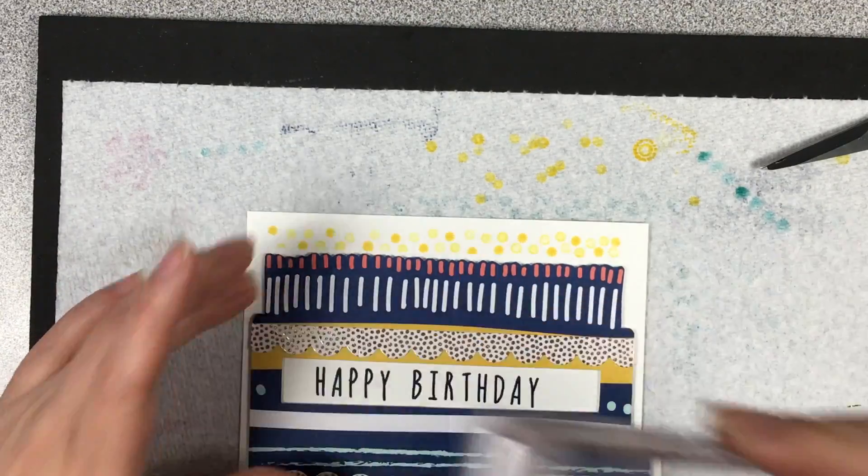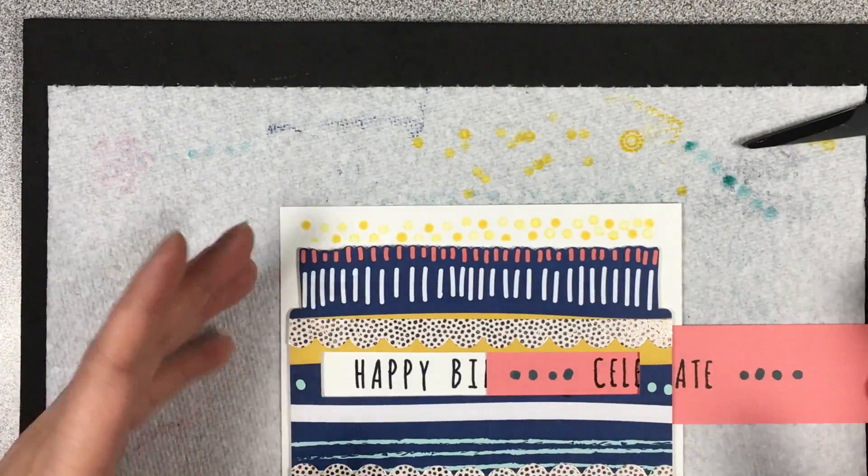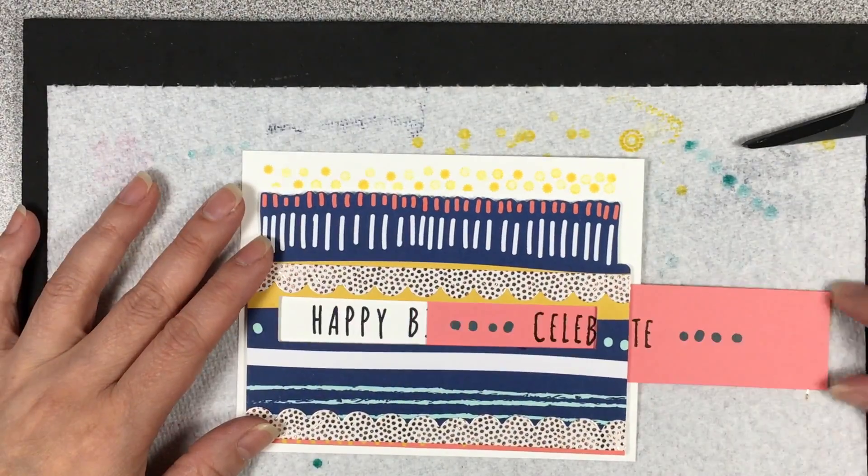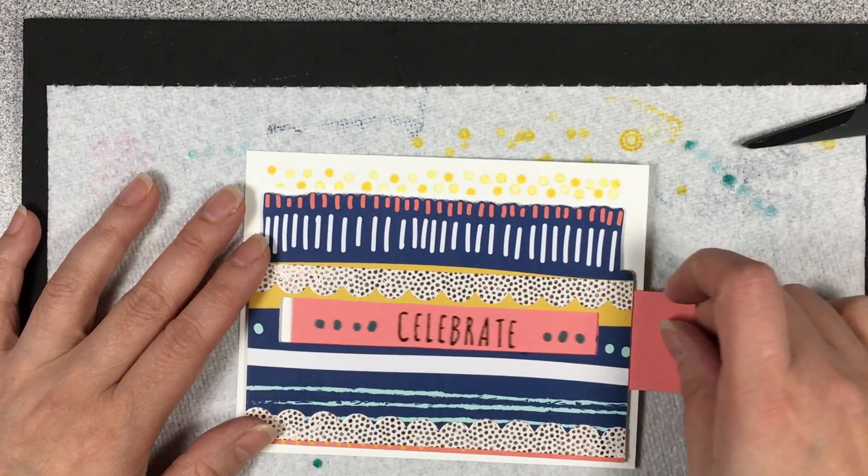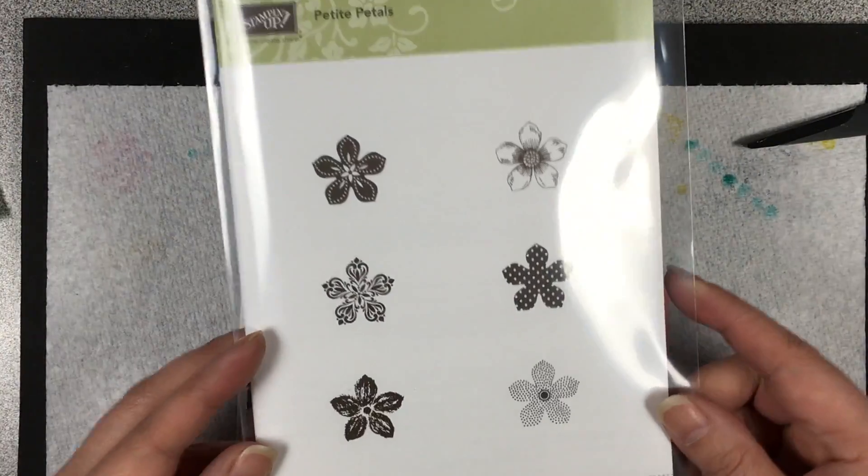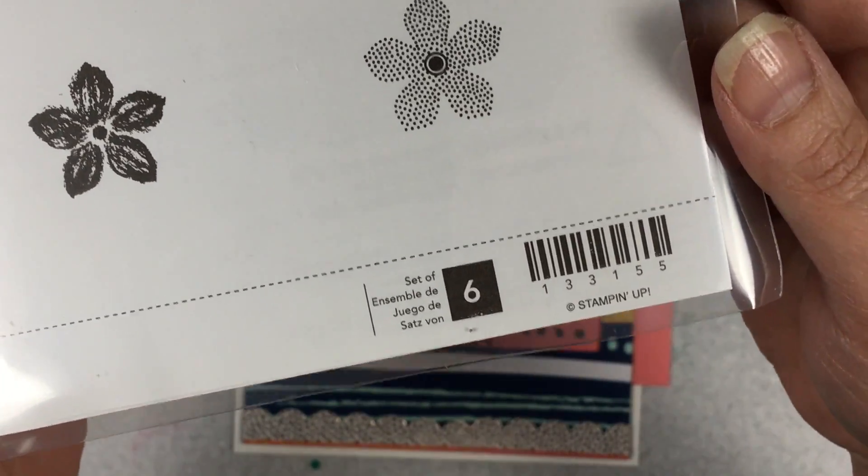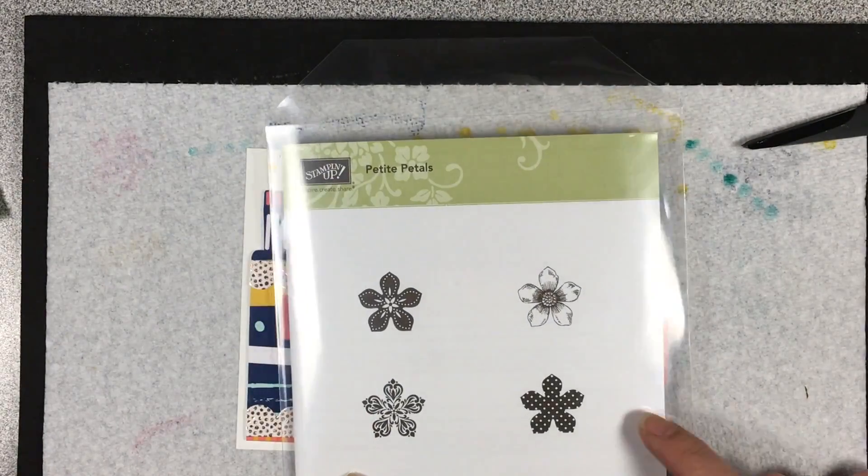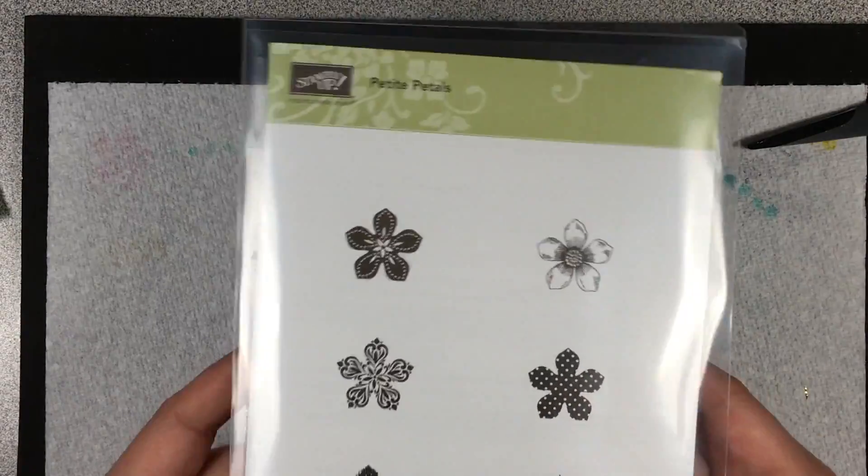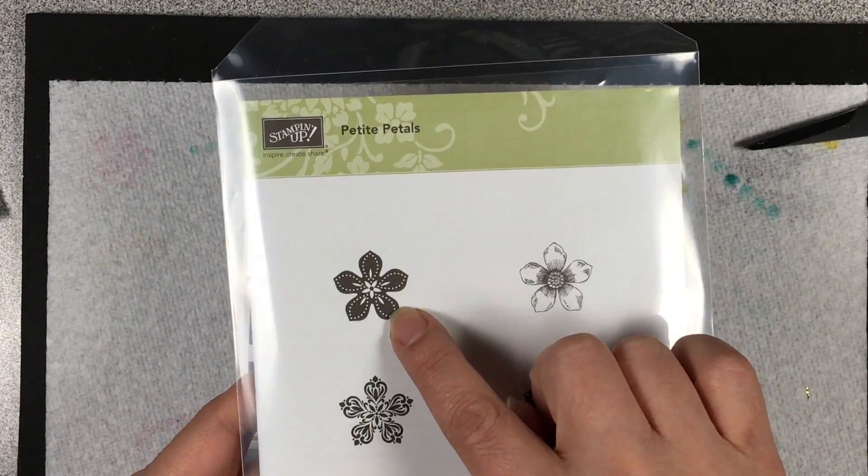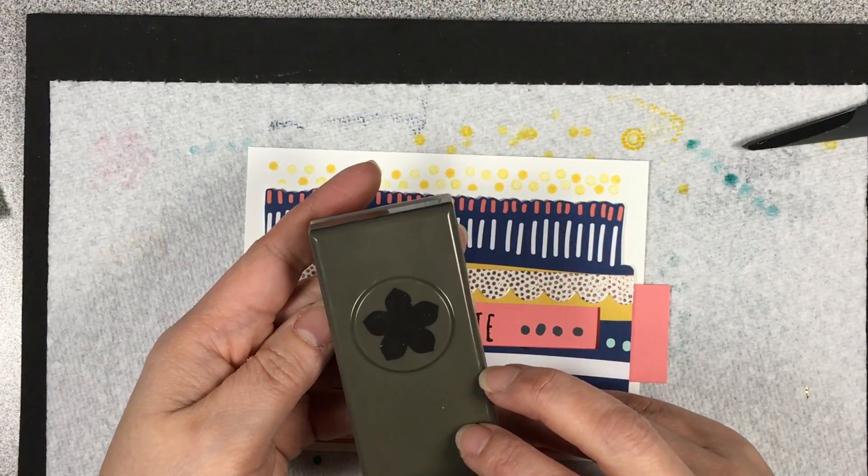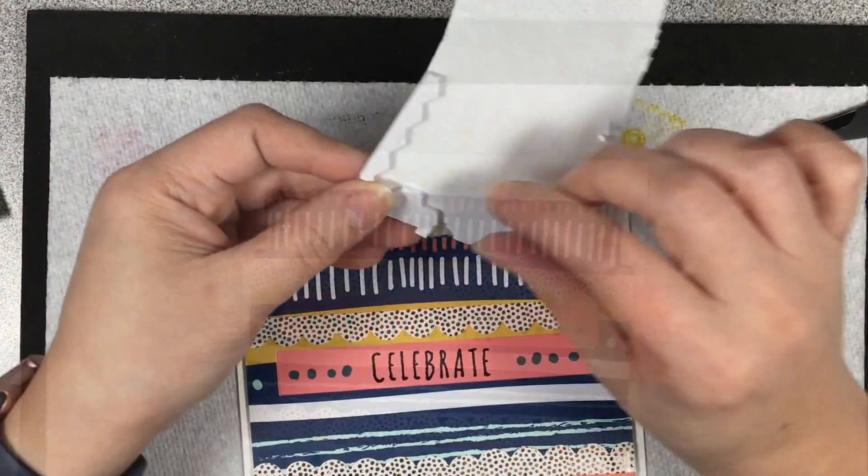I stamped that slightly to the left of the window, and the celebrate panel is sliding in there nice and smoothly. Just to add something nice and flowery, I'm making three flowers using the Petite Petals stamp set. I used the color Melon Mambo and punched it out with the coordinating punch.